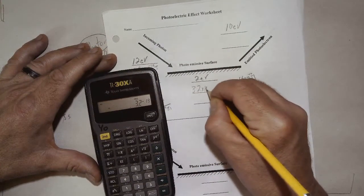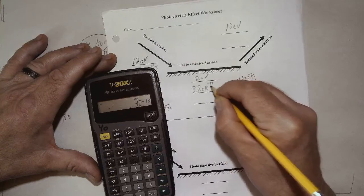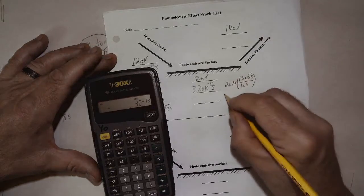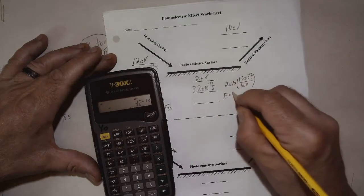3.2 times 10 to the negative 19th joules. And we want to convert that using the formula E equals HF.